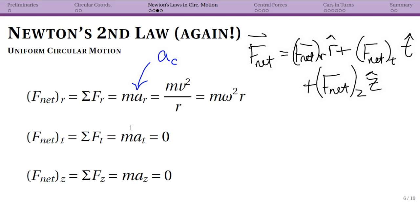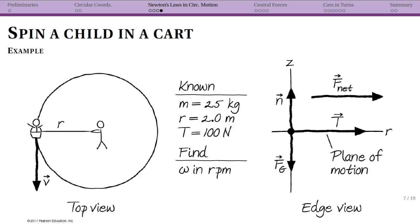For uniform circular motion, the accelerations in the tangential and Z directions are equal to zero. You might still have forces in those directions, but the sum of all forces in those directions must equal zero. The sum of your forces in the radial direction is mass times centripetal acceleration. There's no special force giving you circular motion — it is the sum of all your radial forces that gives the radial component of F net, and that leads to circular motion.